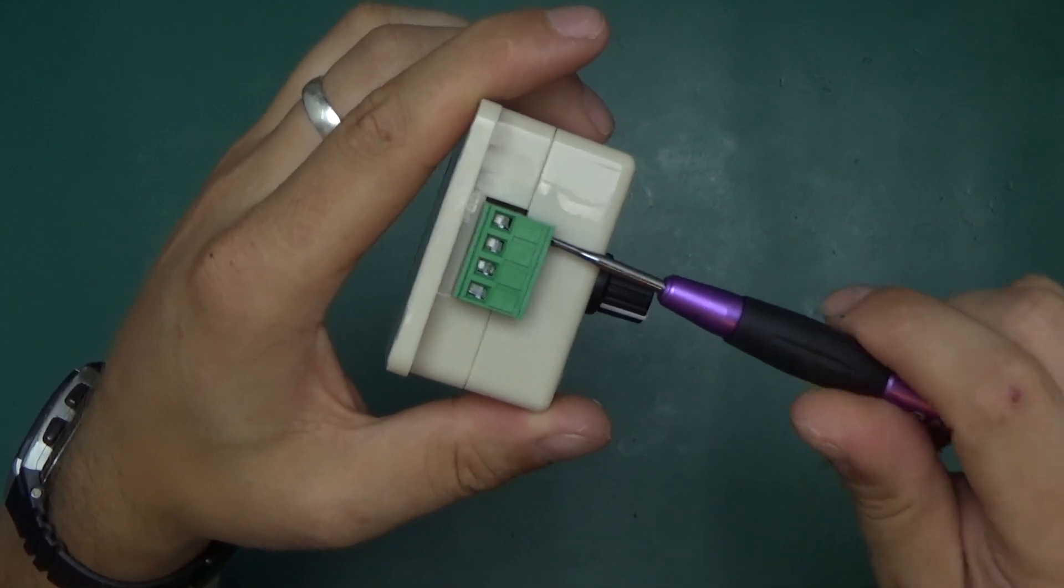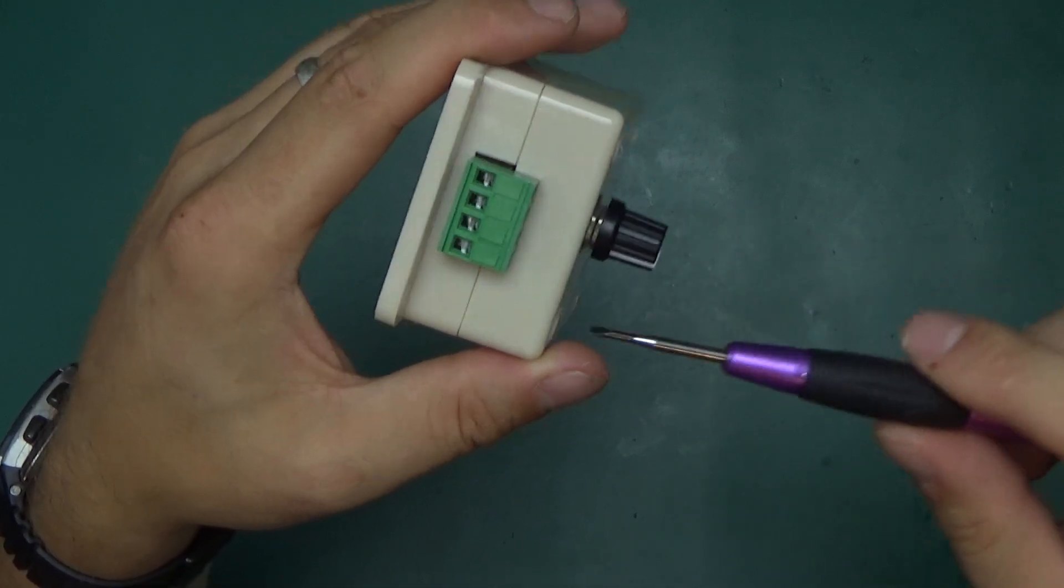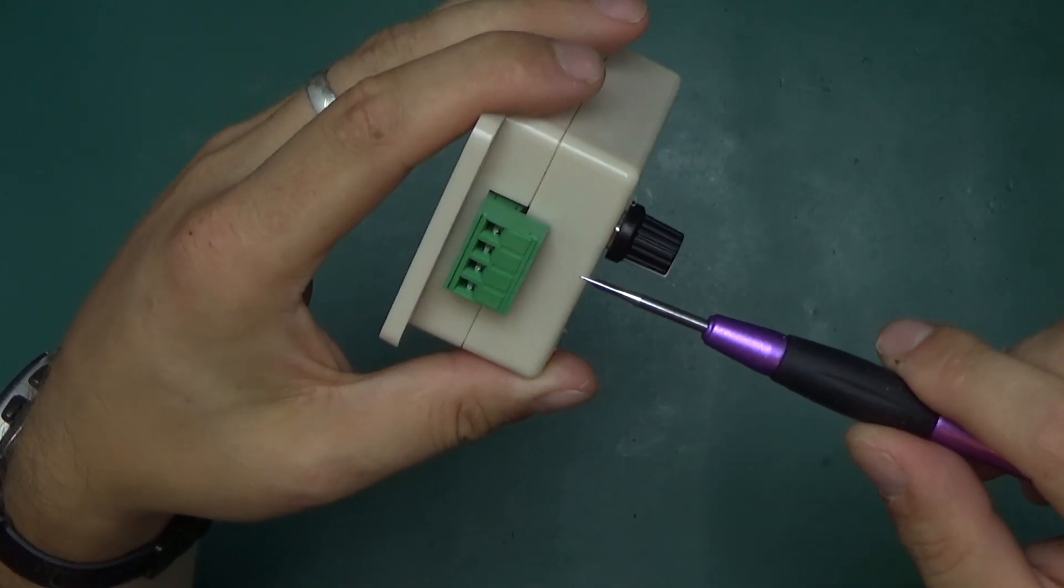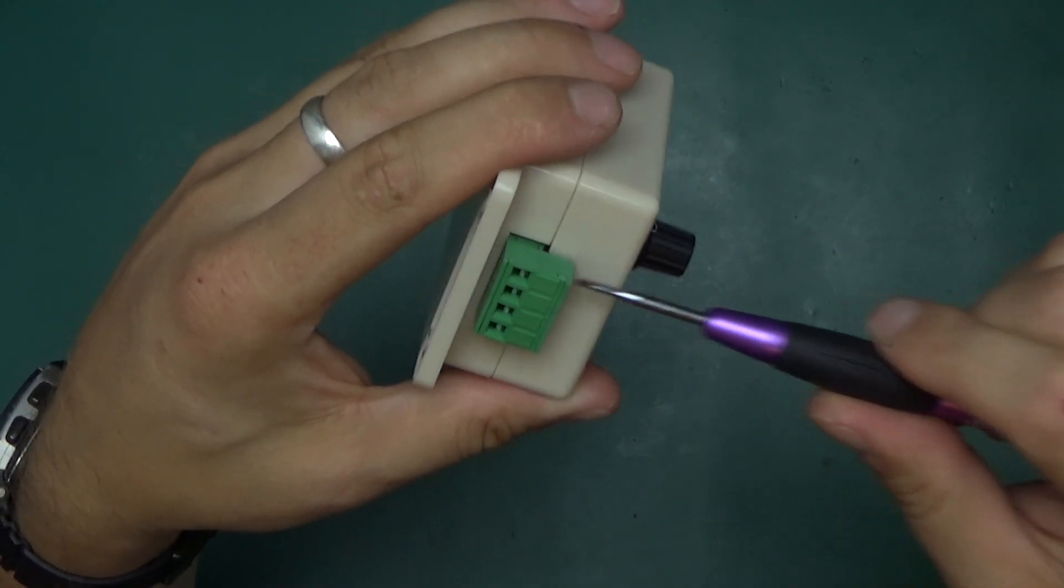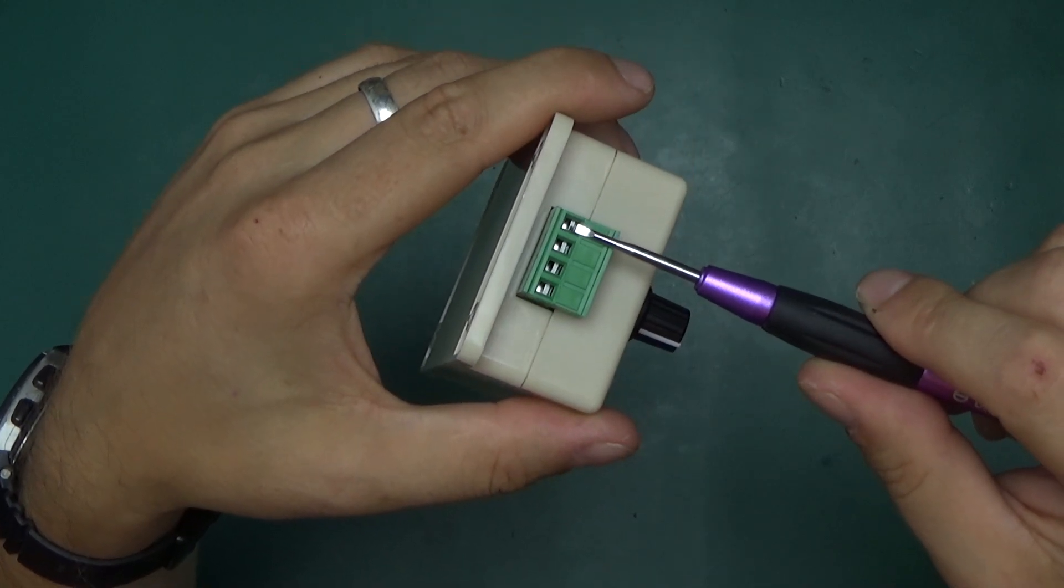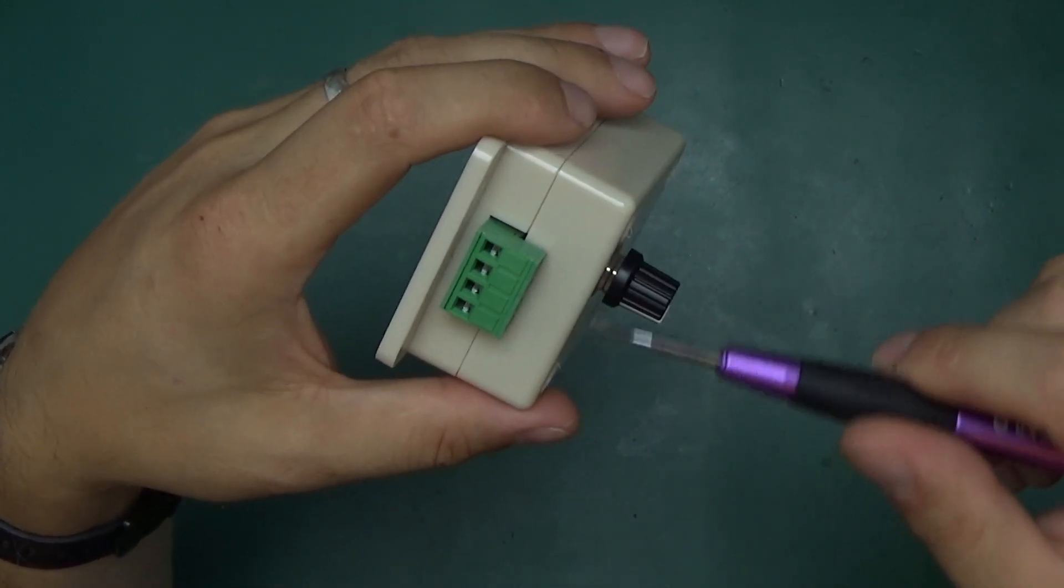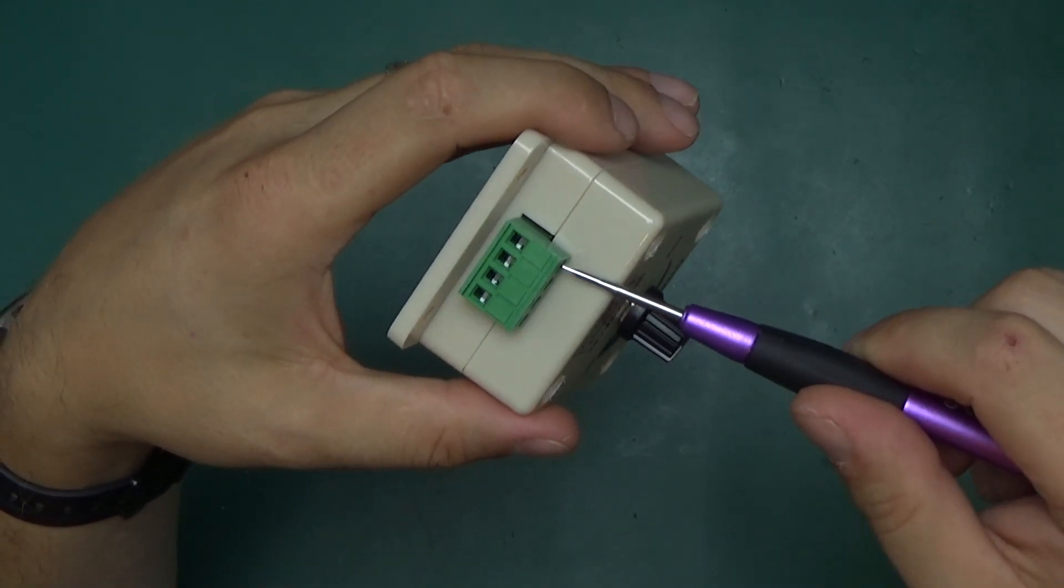Now, there are three types of connectors, screw terminals like this, that I've come across. One is where the screw that you screw in here pushes right against the wire that you want to connect. And those are horrible. Very often they break the wire.